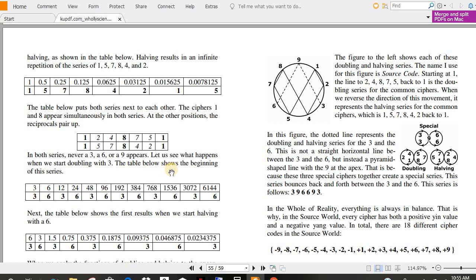Let us see what happens when we start doubling with 3. The table below shows the beginning of this series. 3, 6, 12, 24, 48, 96. 3, 6, 9, or 3, 6, 3, 6, 3, 6, so on and so forth. It's just fascinating that that comes out like that.